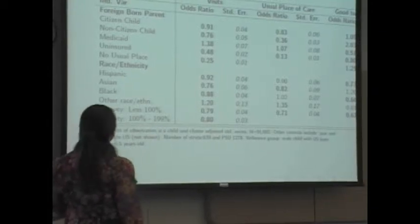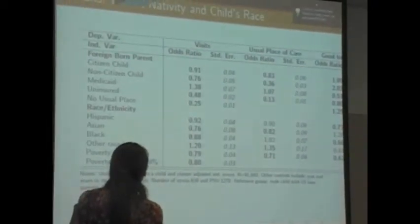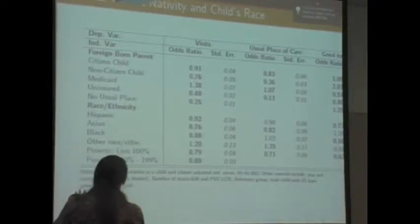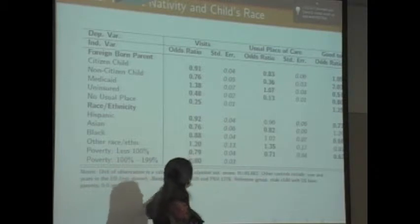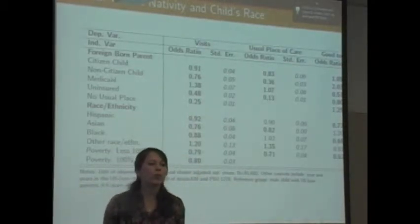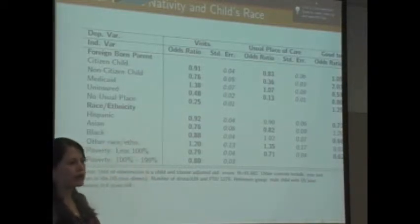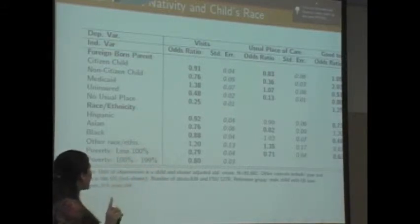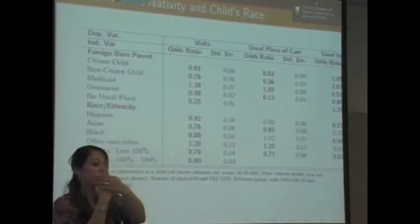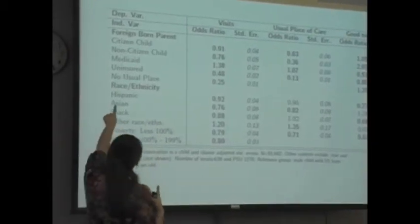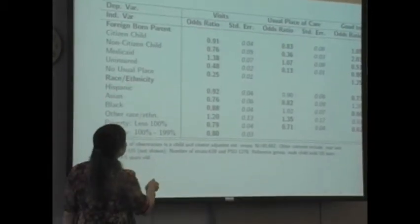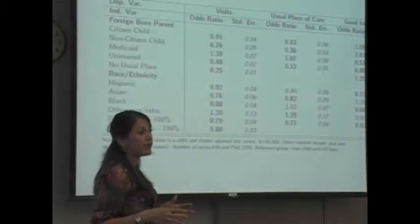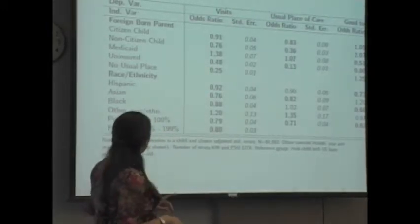Just to show you the basic result, which takes into account whether the parent is a foreign-born parent and the child being a citizen or not — if the numbers are below one, they have a lower probability of having visited the doctor in the past 12 months, at least once. Comparing the child of a native family, whose odds of visiting the doctor is one as the baseline, a citizen child of a foreign-born parent has an odds ratio of 0.91 — close to one but still significant and lower.